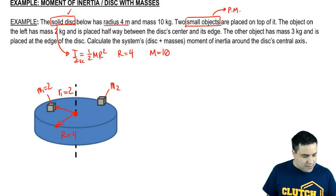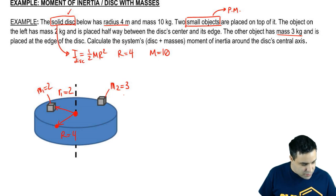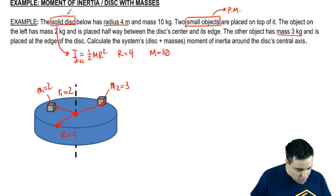And the other guy, the other object is 3 kilograms in mass, and it's placed at the edge of the disk. So if you're all the way at the edge, your distance, let's call this r2, is the same as the radius, which is 4.